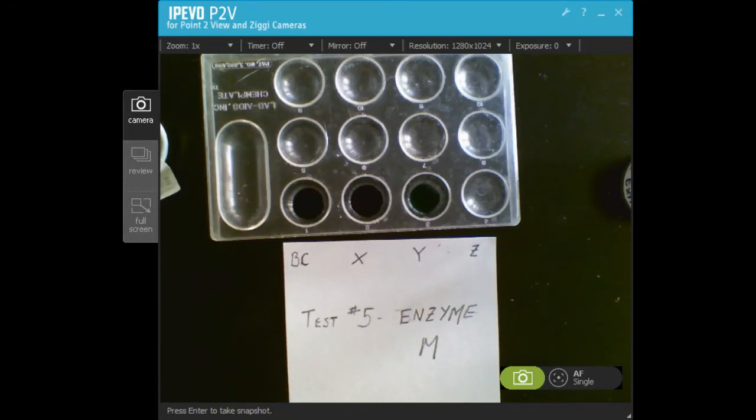Hey everyone, in this video I am going to complete test number five for the New York State relationships and biodiversity lab. Test number five is going to test for the presence of enzyme M in each of the four plant species: Botanicuris, species X, Y, and Z.